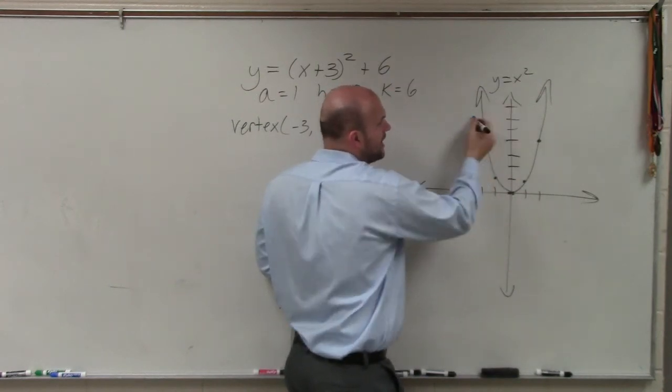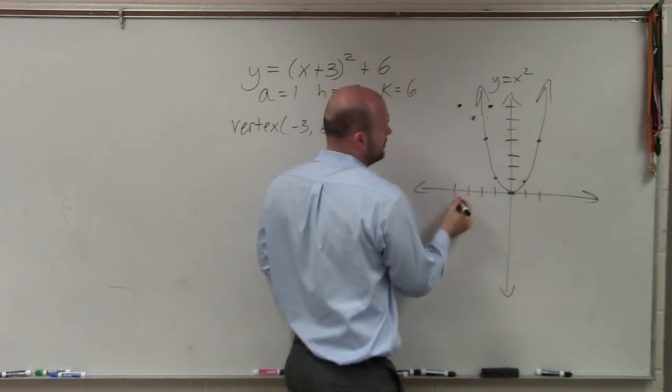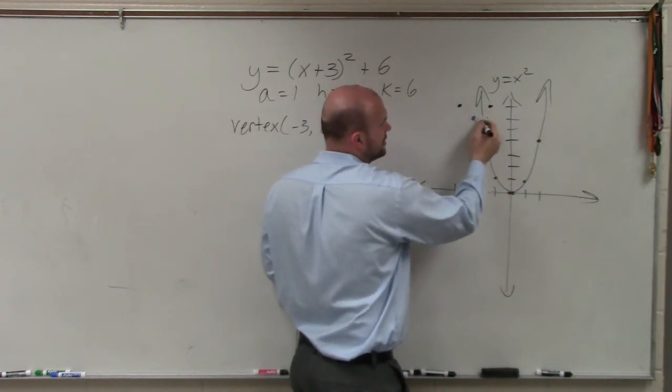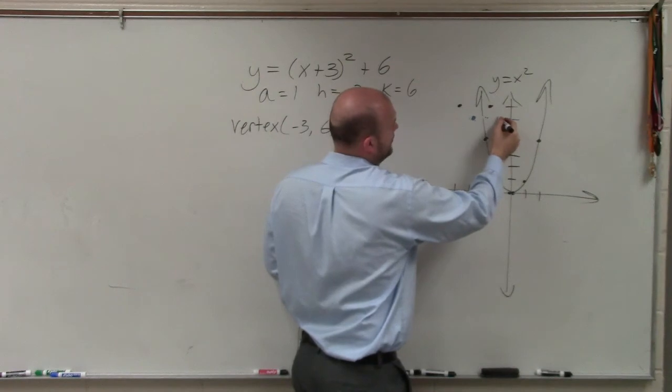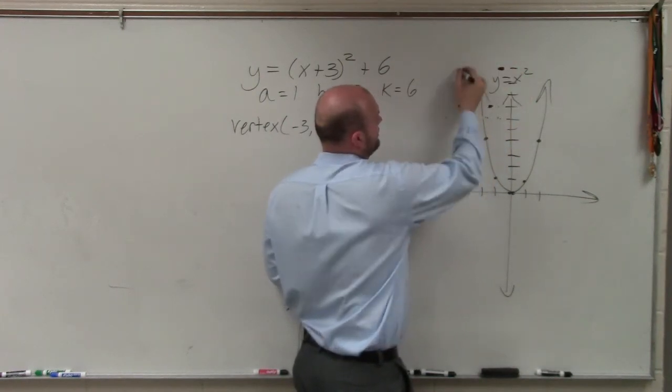So from here, I go over 1, up 1, over 1, up 1. Then you go over 2, up 4, over 2, up 4. So I go over 2, up 4: 1, 2, 3, 4. Over 2, up 4.